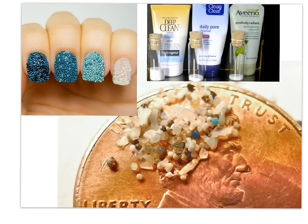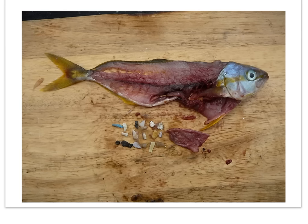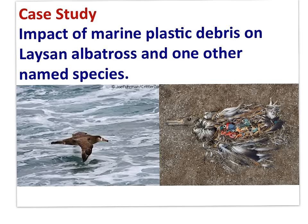Micro-beads and micro-plastics used in various bathing products have entered water supplies. Data is being collected on the harm caused to organisms that ingest the micro-beads. Animals of all sizes have ingested plastic, as can be seen with illuminated green pieces in the guts of these animals, and plastic has been found in the stomach of fish as well. This was a short case study on the impact of marine plastic debris on the Laysan albatross. The IB syllabus statement asks you to examine the impact of marine plastic debris on the Laysan albatross and one other named species — research that second species yourself. And that brings us to the end of IB Biology, Ecology and Conservation, Option C, Part 5.